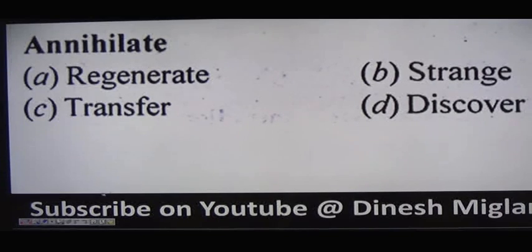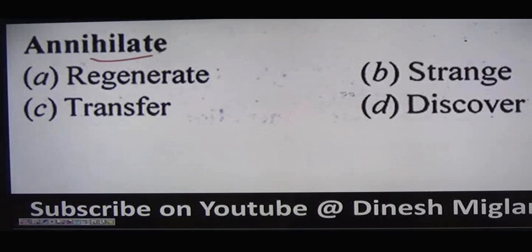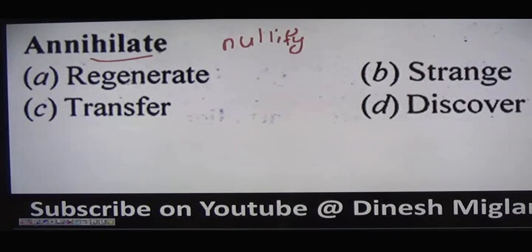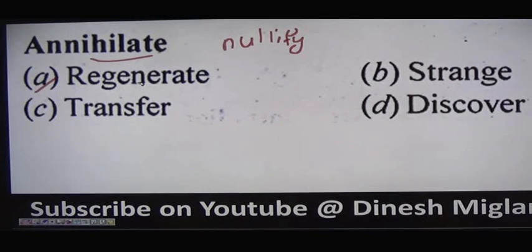Next word: 'annihilate.' Annihilate means to destroy completely, to damage extremely or to nullify something — to make it zero or null. Option A is 'regenerate.' 'Re' means again and 'generate' means to make — so regenerate means to grow something new after any loss or damage. This is the antonym of annihilate. Other options are transfer, strange, and discover — no need to explain those.